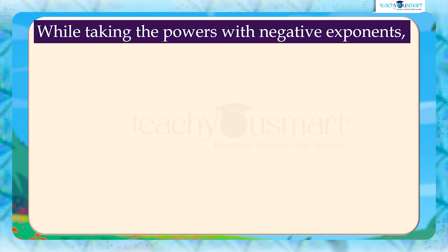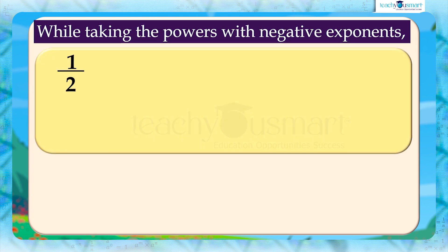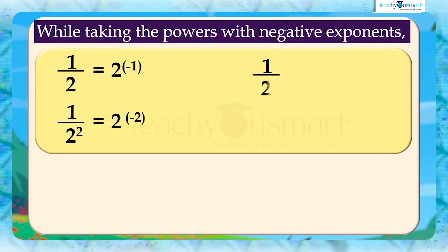While taking the powers with negative exponents, we can see: 1 by 2 equals 2 raised to minus 1; 1 by 2 squared equals 2 raised to minus 2; 1 by 2 cube equals 2 raised to minus 3; 1 by 2 raised to 4 equals 2 raised to minus 4.